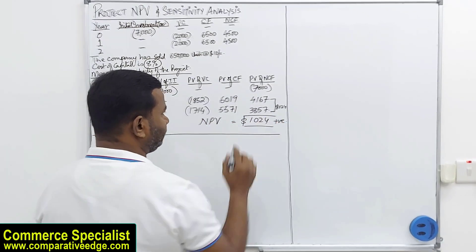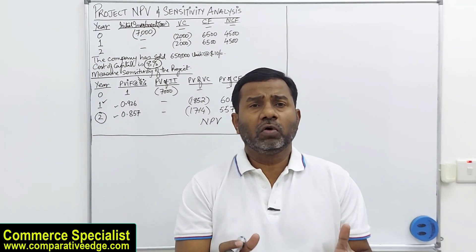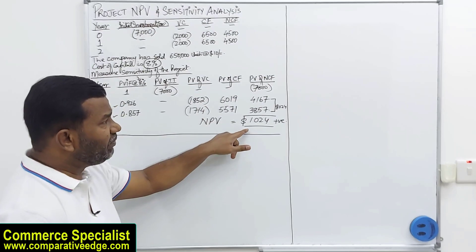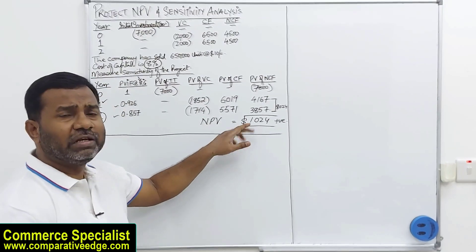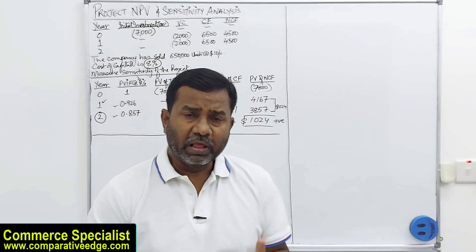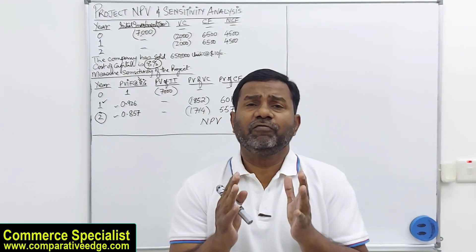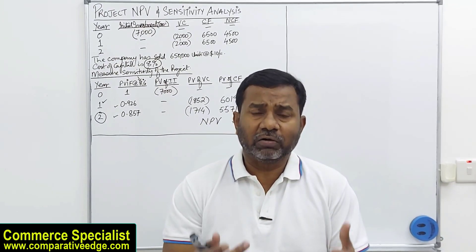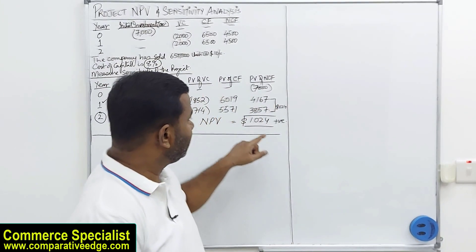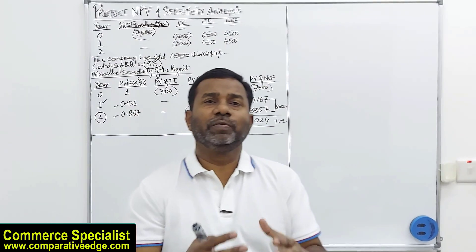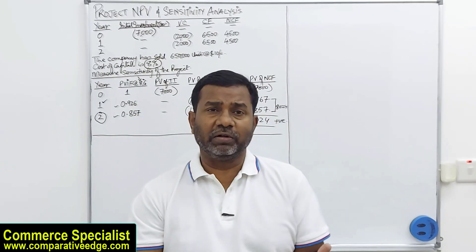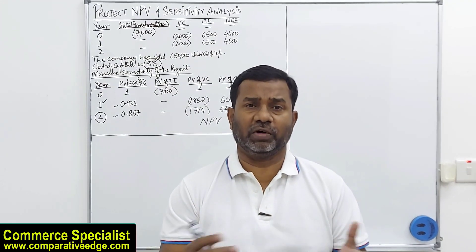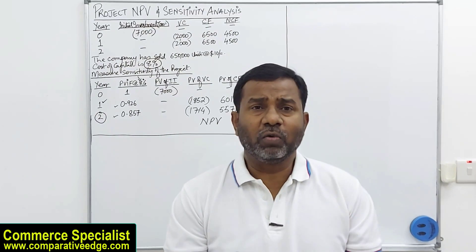Ladies and gentlemen, before we do sensitivity analysis, it is important that we calculate the project NPV. It comes to 1,024, which is a positive NPV. Whenever we have a positive NPV, the project can be accepted — it is feasible. If NPV is negative, we reject the project. Now let's pick the project variables one by one to see how sensitive the NPV is towards changes in those variables.